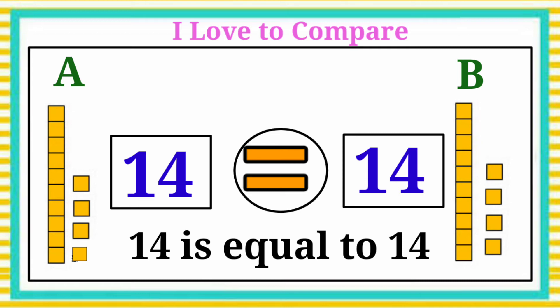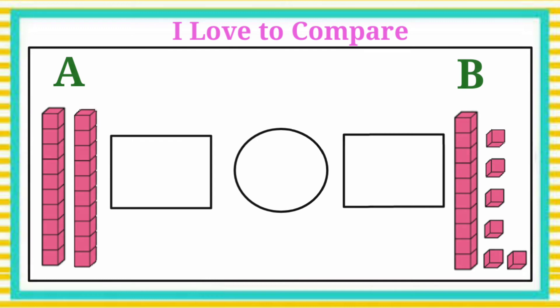See the next example. Here again we have two groups of blocks. Let's count Group A. This is one group of ten blocks and another one group of ten blocks. So Group A has twenty blocks. Let's write the number twenty in the box and count Group B. This is one group of ten blocks and count the others.